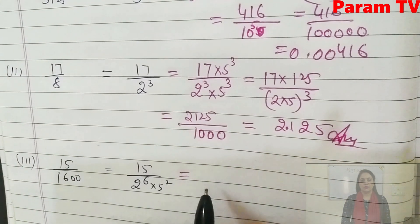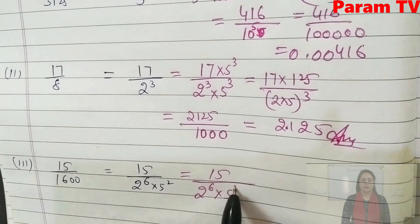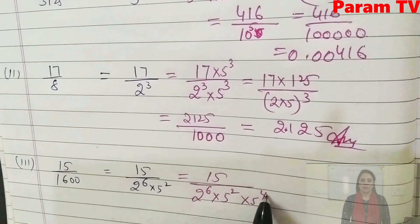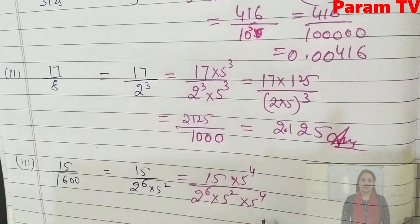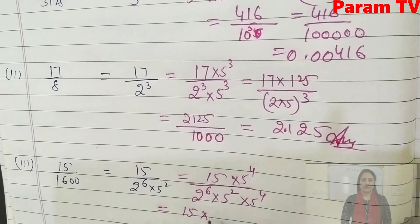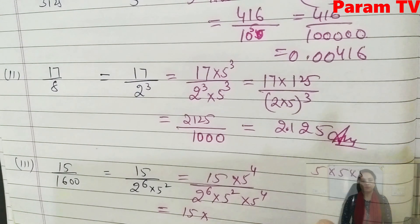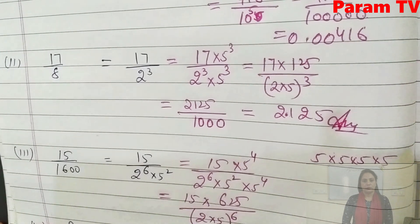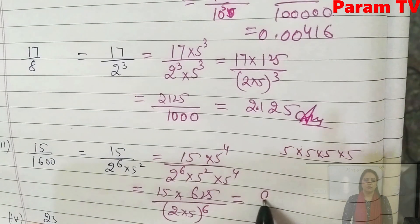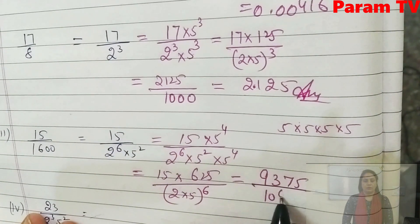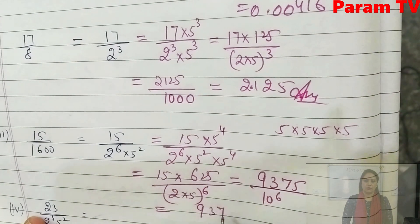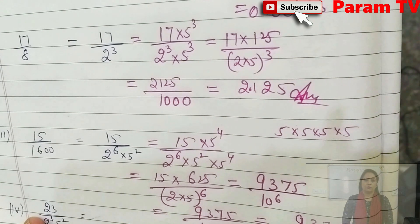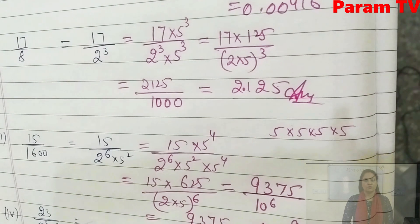For the next one, 15/(2⁶ × 5²): here the power of 2 is 6 and the power of 5 is 2. We need 5⁴ more to make 5's power equal to 6. So we multiply top and bottom by 5⁴. This gives 15 × 5⁴ = 9375 upon 2⁶ × 5⁶ = 9375/10⁶. 10⁶ means 6 zeros, so count 1, 2, 3, 4, 5, 6 decimal places. That is the decimal expansion.